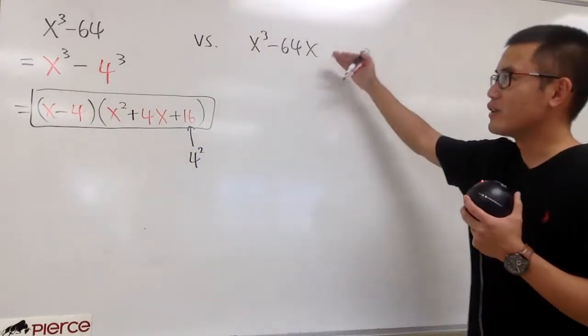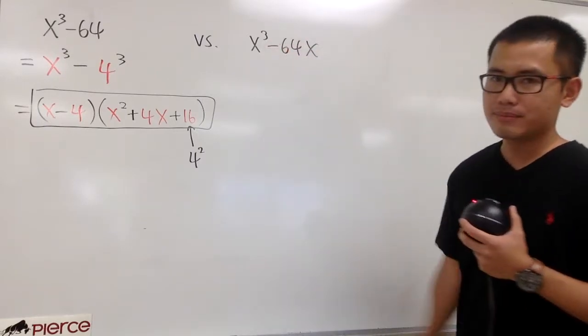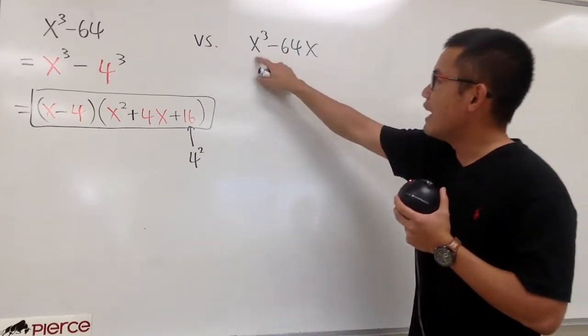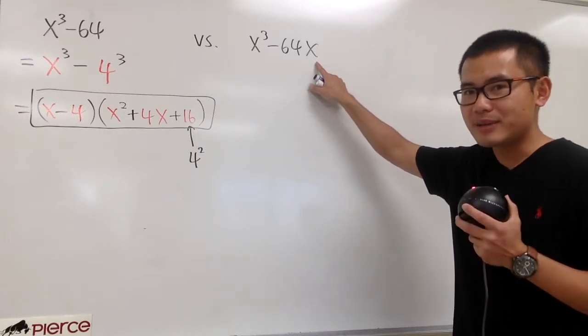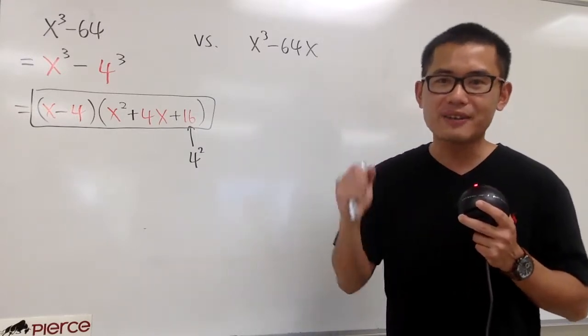And now, let's take a look at this one. x to the 3rd power minus 64x. How can we factor this out? Well, we have x to the 3rd power, and here for the second term, we also have an x. So, be sure we factor out the common factor first.